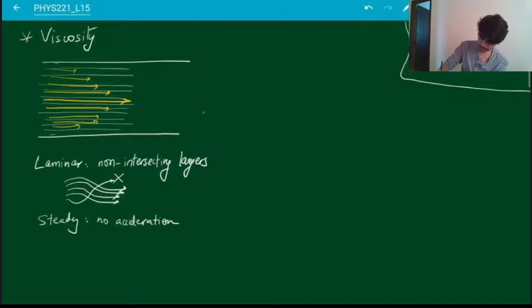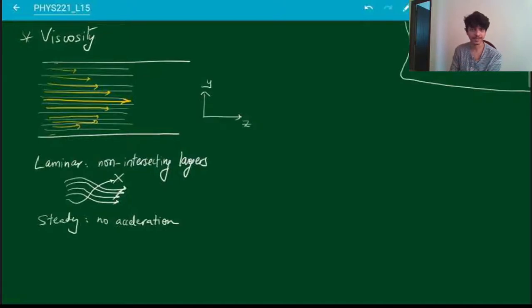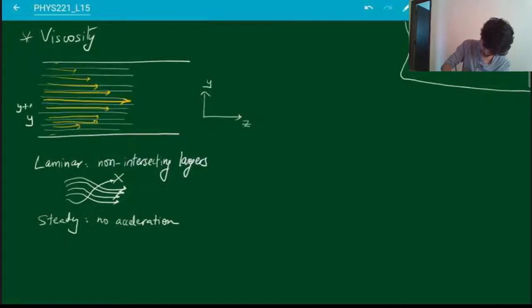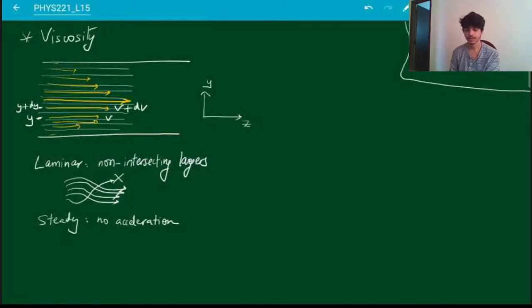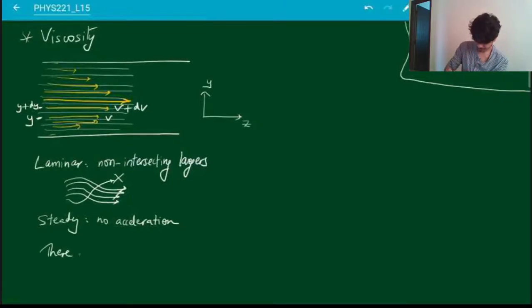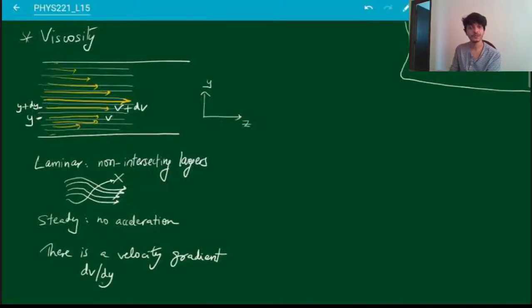If I consider this to be my z-direction and this to be my y-direction — it's just convention, y is taken to be z and not x — what we are saying is that if I go from a position y to a position y plus dy, then over here the velocity is v and over here the velocity is v plus dv. So there is a velocity gradient. This is the effect of viscosity.